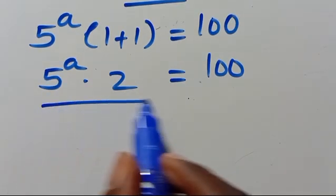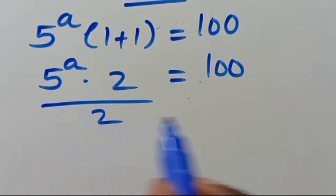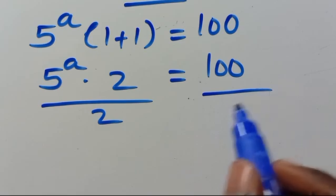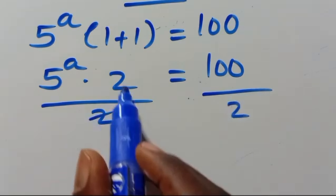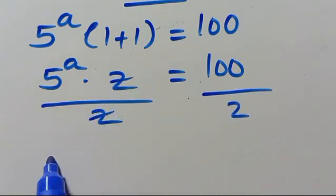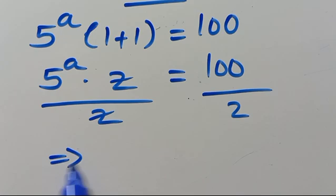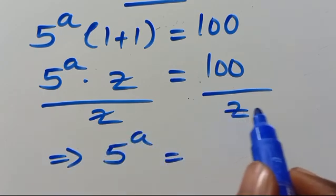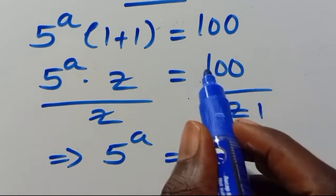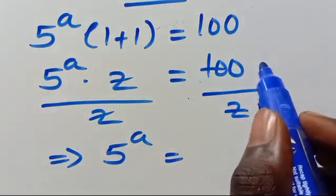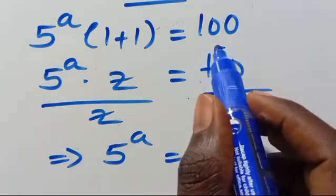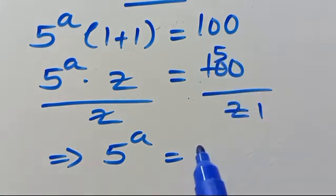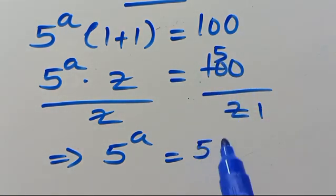So from here let's divide by 2. This implies we have 5 to the power of A equals 100 divided by 2, which will be 50.